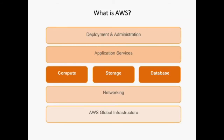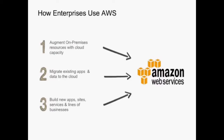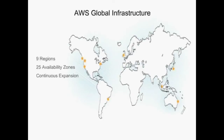There are a variety of ways that companies and organizations use AWS. The three main ones are: first, to augment on-premise resources with capacity in the cloud; second, to migrate apps from a corporate data center onto the cloud; and thirdly, to build brand-new applications, sites, services, and other greenfield lines of business on the cloud. AWS has a global infrastructure — available in nine regions around the world and 25 availability zones — and allows you to go global in literally a few minutes or a couple of clicks.